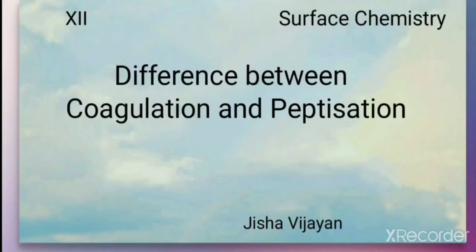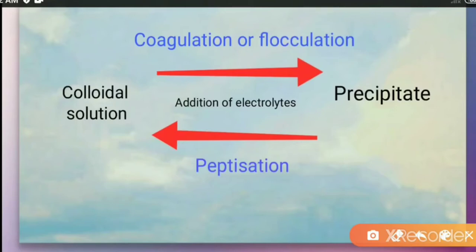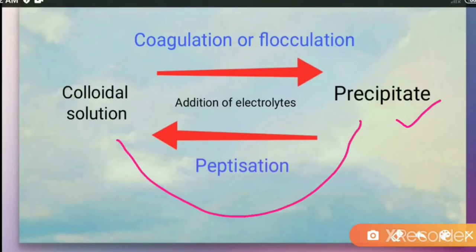In this video we will discuss the difference between coagulation and peptidization. As we learned in the previous video, coagulation is a process in which when we add electrolyte to a colloidal solution we get a precipitate. But what happens when we add electrolyte to a precipitate? We get a colloidal solution.